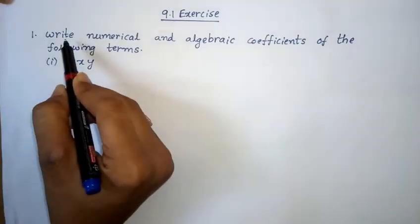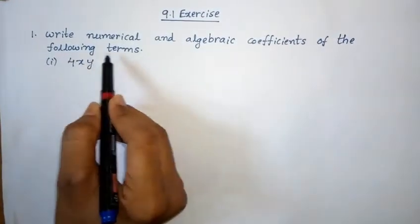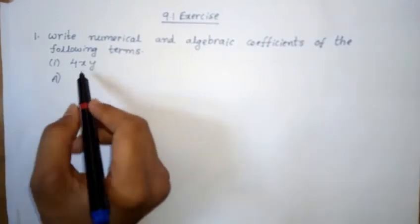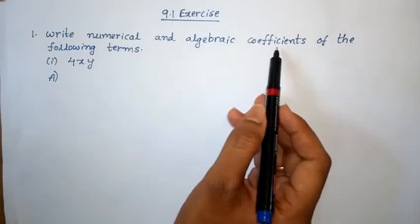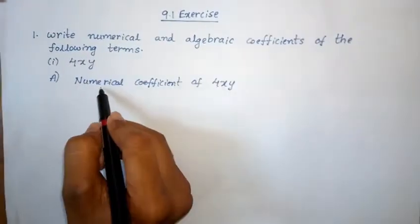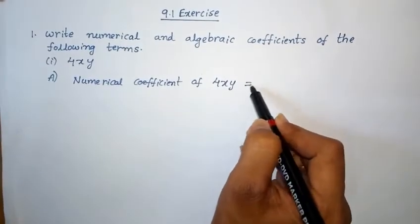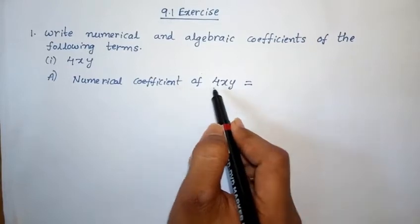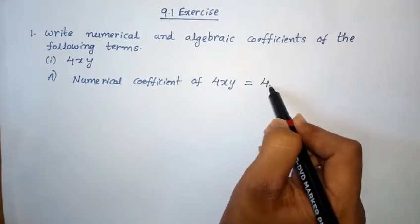First problem: write numerical and algebraic coefficients of the following terms. First one: 4xy. So in this problem, we need to find numerical and algebraic coefficients. Numerical coefficient of 4xy — numerical coefficient is a number only. So in 4xy, the number is 4, so numerical coefficient is 4.